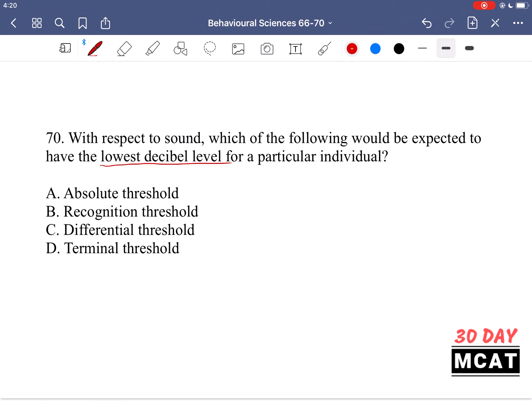Option C, the differential threshold. This is when you can detect the difference between two of the same stimuli. So if you're getting one stimulus, auditory stimulus, at a given decibel level, how much does that decibel level have to change? You can tell between A and B, there's a difference in intensity or the loudness of the sound.